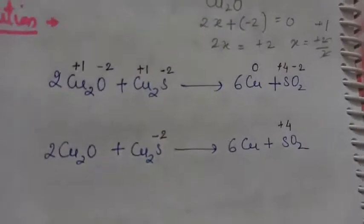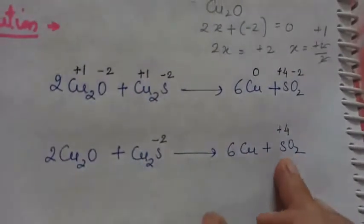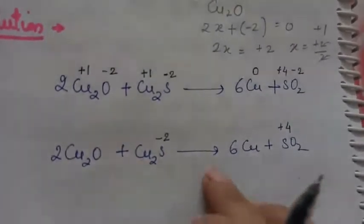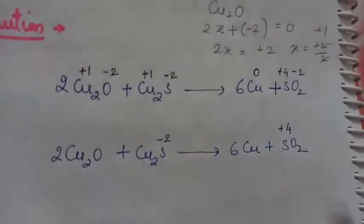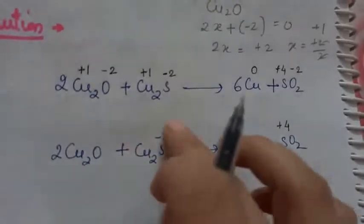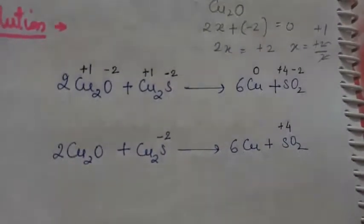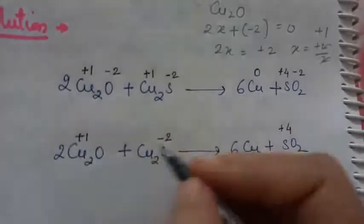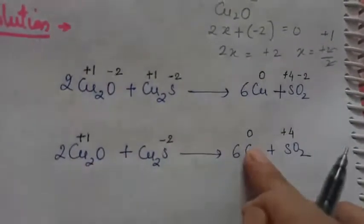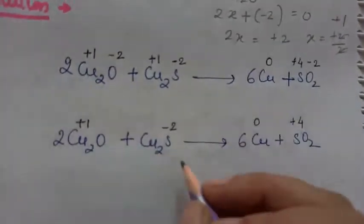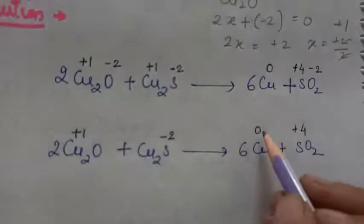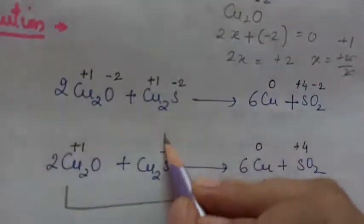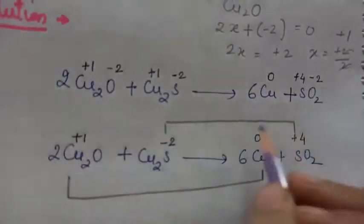You can see that sulfur goes from −2 to +4. For copper, it goes from +1 to 0. Now remember: when one species is oxidized, the other must be reduced — you cannot have the same type of change for both. Sulfur shows an increase in positive charge from −2 to +4, and copper shows a decrease in positive charge from +1 to 0.